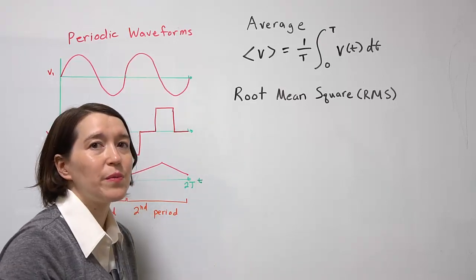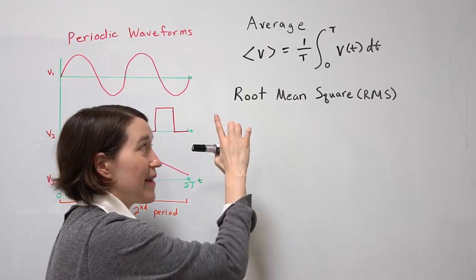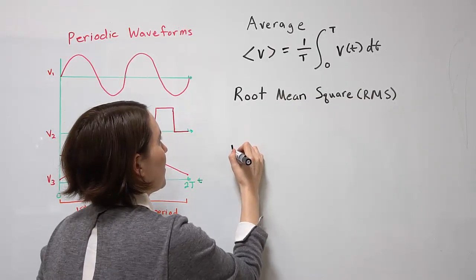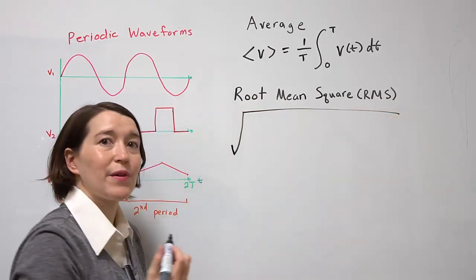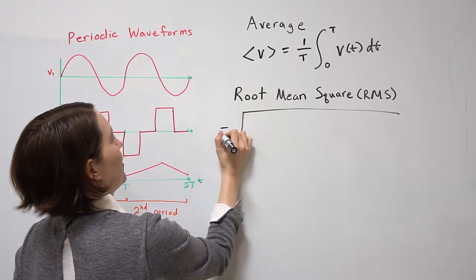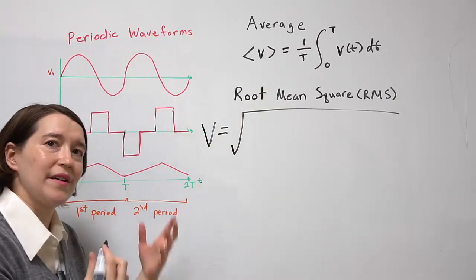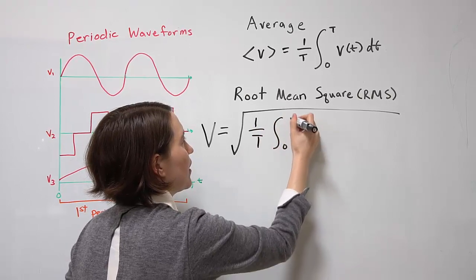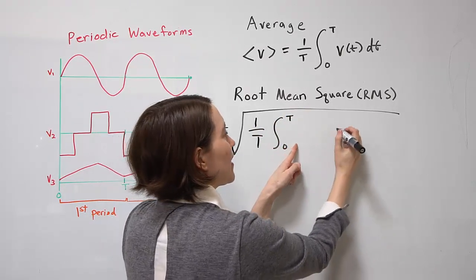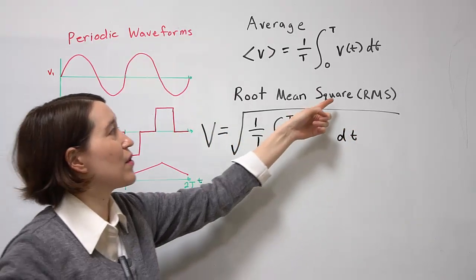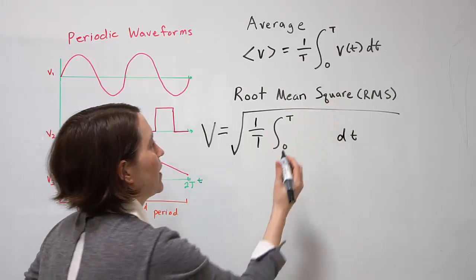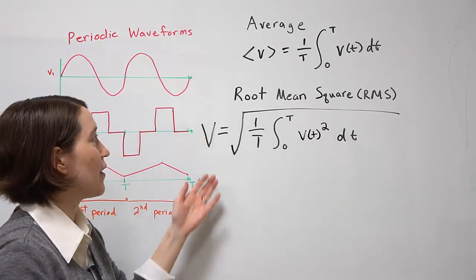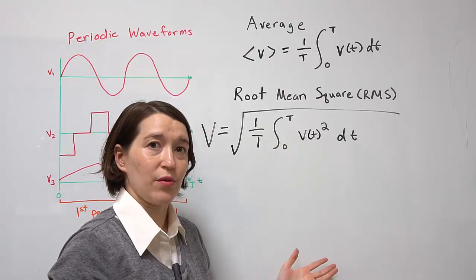The second value is the root mean square. The name actually defines it — it's the root of the mean of the square of a waveform. We define this as a capital letter V for voltage. We start with the square root, then take the mean: 1 over t, integrated from zero to t, of V(t) squared. That is the definition of the RMS value for a waveform.